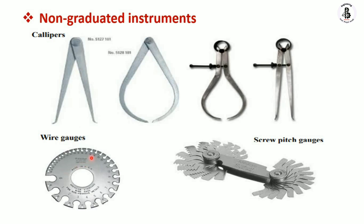This is my wire gauge. All these slots are available for different standard dimensions of wire. Once a wire is passed into a slot, it gives the measurement of your wire diameter — this is one kind of indirect measurement. There is no need to measure wire diameter with a vernier caliper or micrometer; this gauge gives an indirect but accurate reading. This is the screw pitch gauge. If you want to measure the pitch of threads, you directly attach it onto the thread, and this is also one kind of indirect measurement using non-graduated instruments.